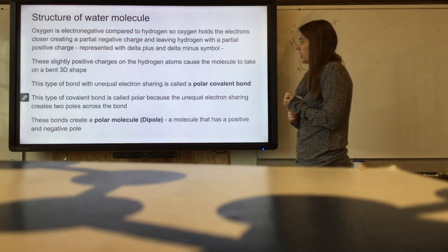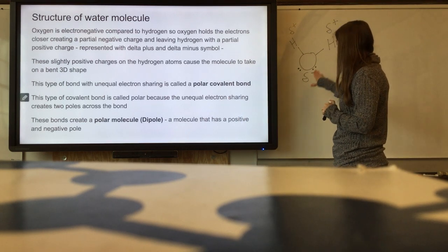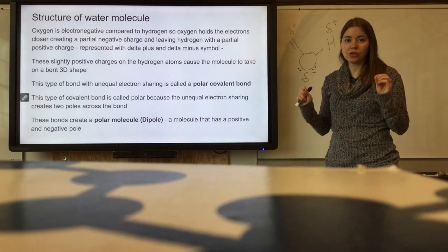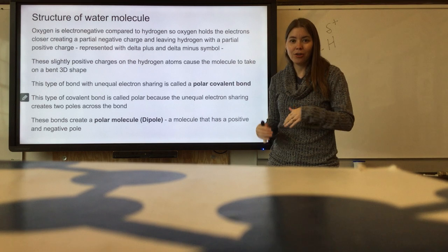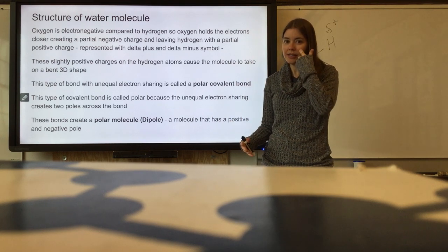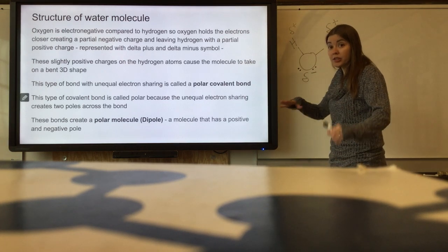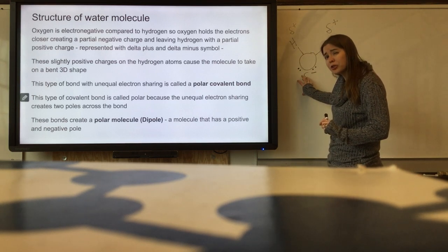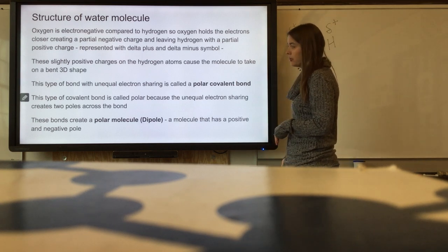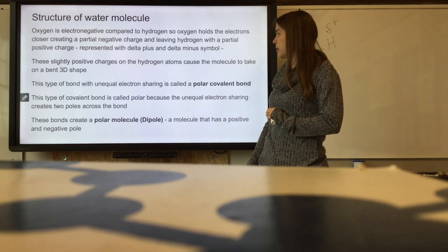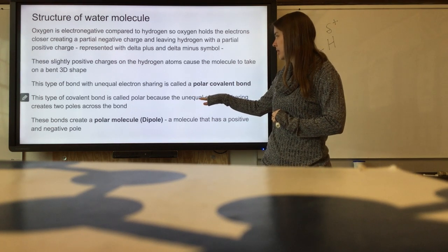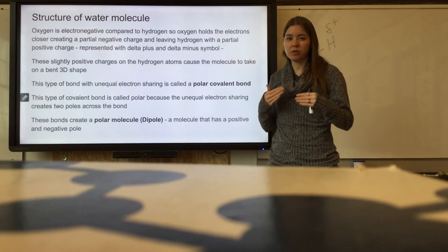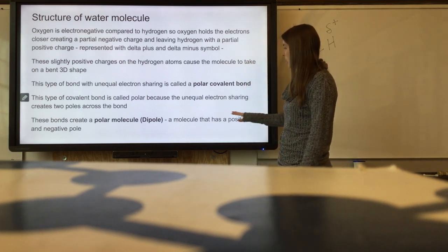The type of bond with unequal electron sharing is called a polar covalent bond. Polar meaning that it has slightly positive charges and slightly negative charges. If something is polar, it has slight charges to it. Think about the poles of a magnet: you have a positive pole and a negative pole, same idea. It's a covalent bond, but it is polar because there is a slightly negative charge on the oxygen and a slightly positive charge on the hydrogen. It's also sometimes called a dipole molecule because there's two poles: positive side and negative side.